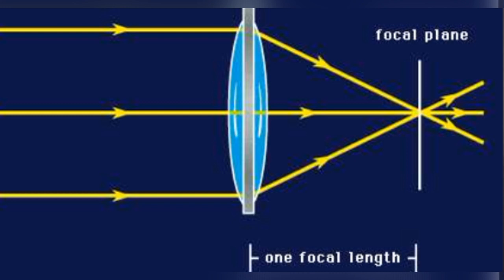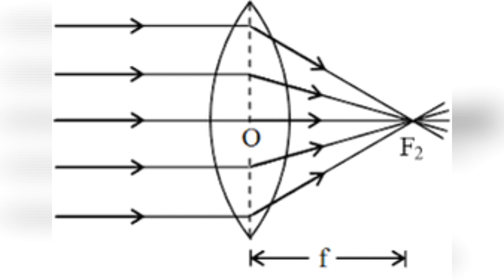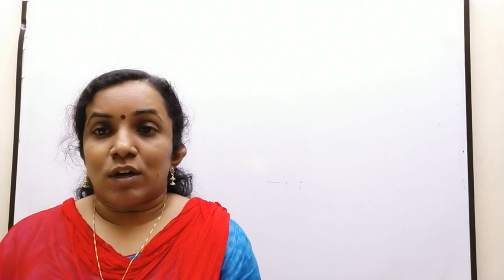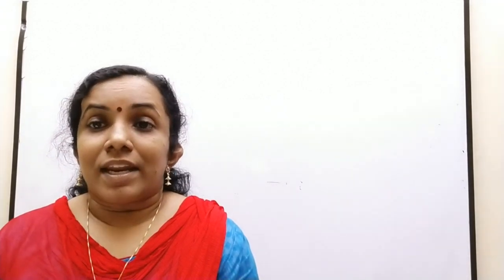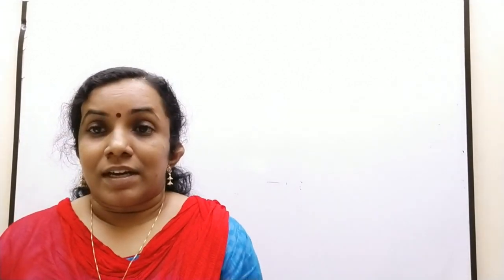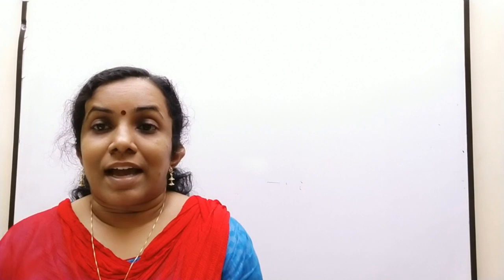The last term is focal length. The distance of the focus from the optical center of the lens is called the focal length. A lens has two focal lengths. The distance from the optical center to its first focal point is called the first focal length F1. The distance from optical center O to the second focal point is called the second focal length F2. The focal length of a lens depends on the radii of curvature, the refractive index of the material of the lens, and the wavelength of light used.